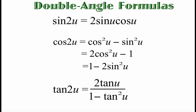We're going to start off with those double angle formulas. You can see there are different formulas for sine, cosine, and tangent. Cosine actually has three different formulas that we could use, and all three of those show up on your trig sheet. It really just depends on the situation which of these formulas we would use — otherwise it's just a preference thing and you can pick whichever one you want.